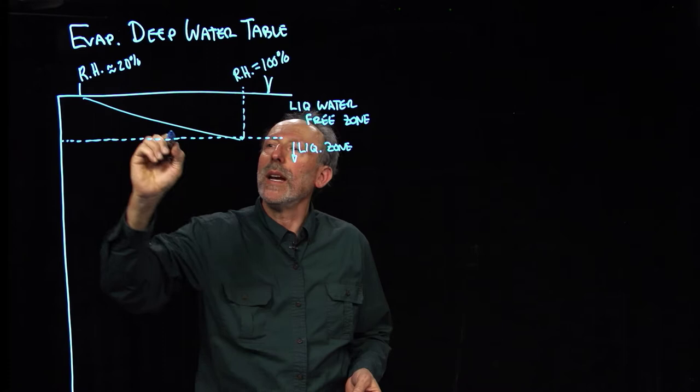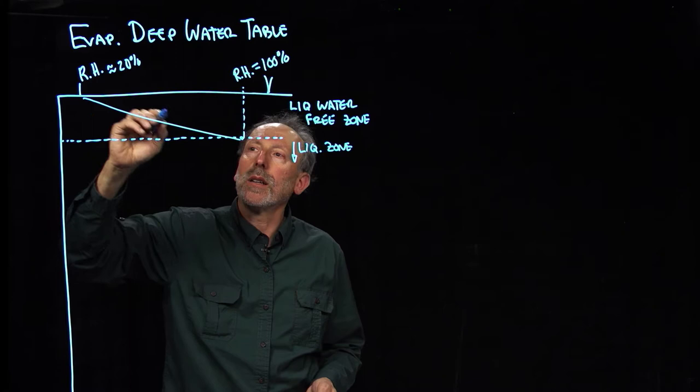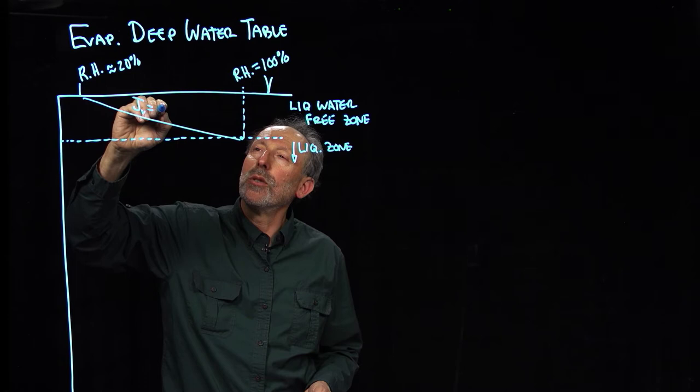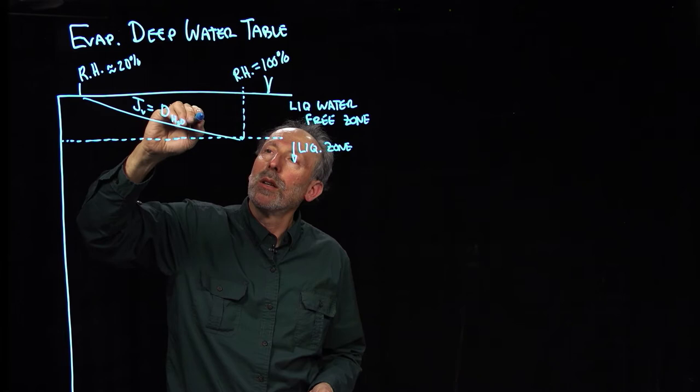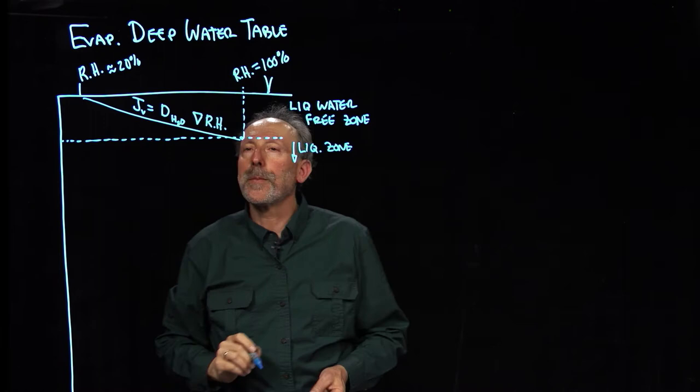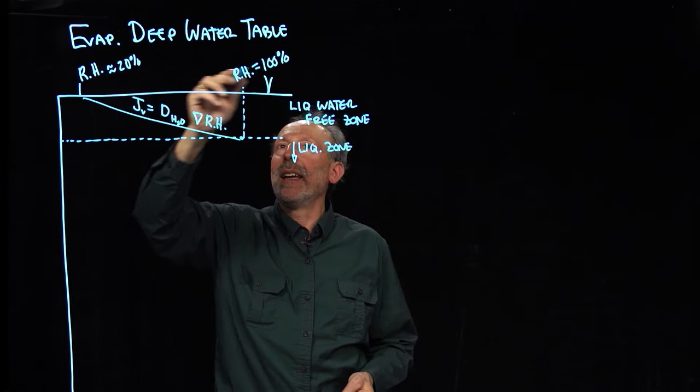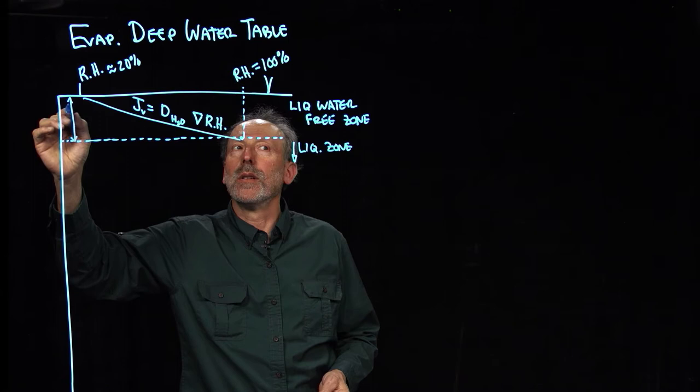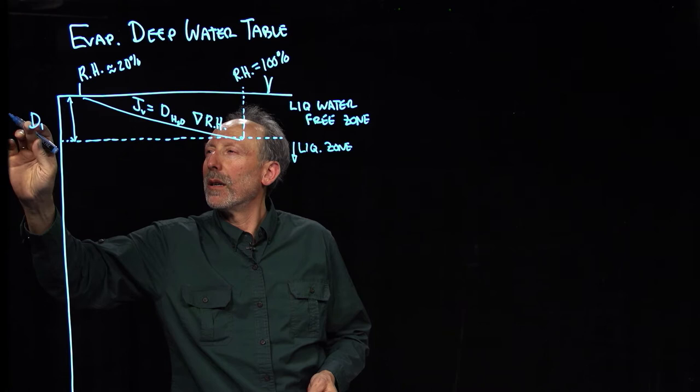So what we end up with then is a gradient in relative humidity. So the flux here, the vapor flux, we can call as J vapor, is equal to the diffusion coefficient for water times the gradient in humidity. And so of course the gradient in humidity will be something like 80% relative humidity over this depth of the dry zone. So we'll call that depth D1, if you will.